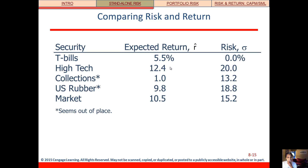Now that we have expected return and standard deviation, let's compare. Thinking about the risk-return trade-off, our riskiest security is high-tech — it has a standard deviation of 20% and the highest expected return. But notice the asterisks on collections and US rubber. US rubber has the next highest standard deviation and should have the next highest expected return, but the market actually does. So something's not quite right — let's come back to that when we look at another measure of risk.